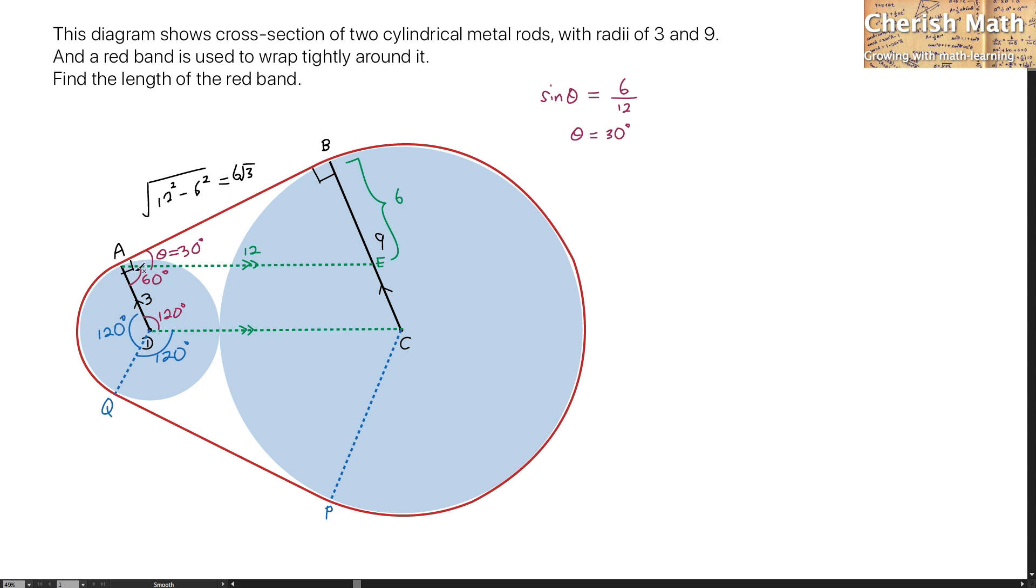By referring to this parallelogram of AECD, I get to know for this part is 60 degrees. And for this part, it is the same as 60 degrees. And for the major sector of this bigger circle, this is going to be 240 degrees. I use 360 degrees minus 60 degrees and minus another 60 degrees, and that is a result of 240 degrees.